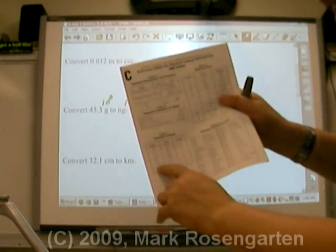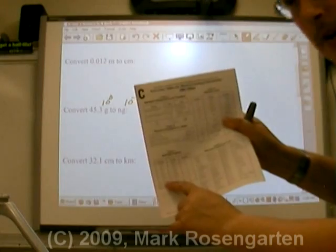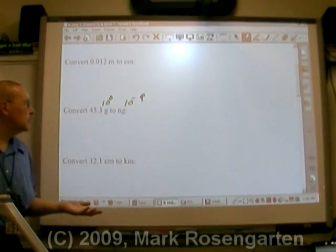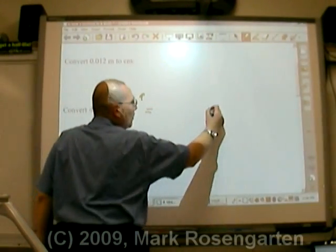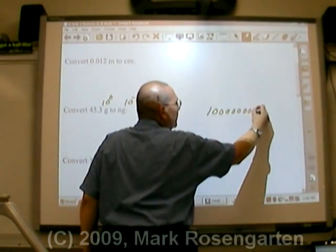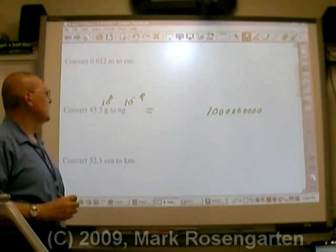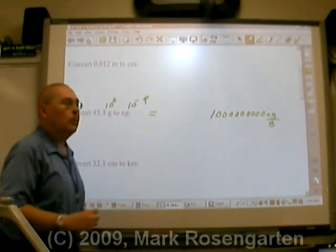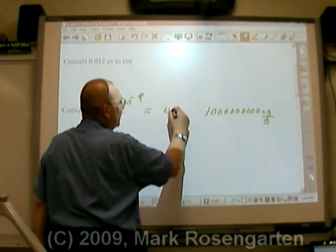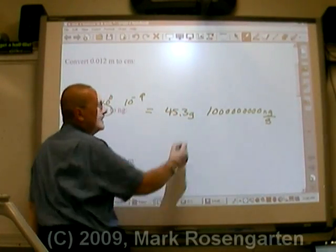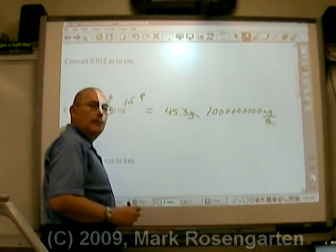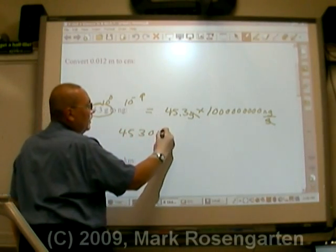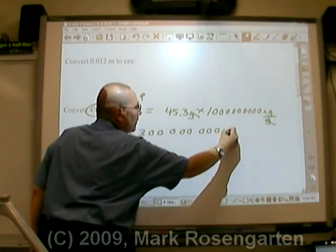According to this reference table, nano is ten to the negative nine. Ten to the zeroth for gram, ten to the negative nine for nanogram. Again, we're given 45.3 grams. How are we going to cancel out grams and be left with nanograms? Multiply. And we end up with 45.3 billion nanograms. That's a whole lot of nanograms.